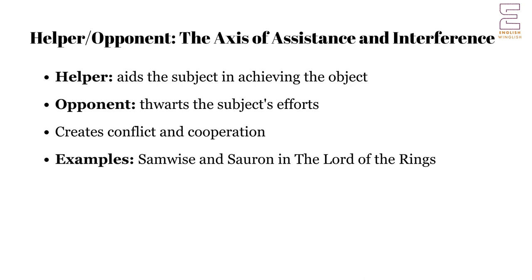The helper and opponent constitute the axis of assistance and interference, representing forces that either aid or hinder the subject in achieving the object. The helper provides support, resources, and guidance that facilitate the subject's quest. This support can come in various forms, such as physical assistance, magical tools, or moral encouragement. In contrast, the opponent seeks to obstruct the subject's progress, creating conflict and challenges that must be overcome. The opponent can be an antagonist, a rival, or any force that opposes the subject's goals. The presence of the opponent introduces tension and conflict into the narrative, making the subject's quest more complex and engaging.